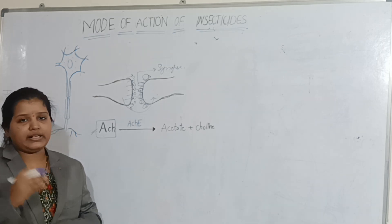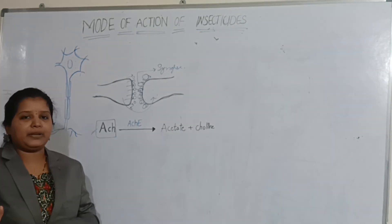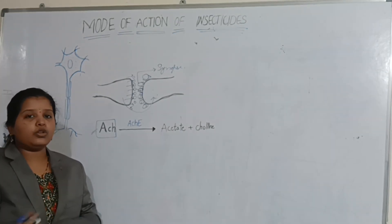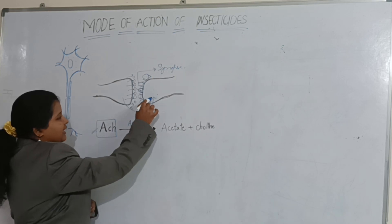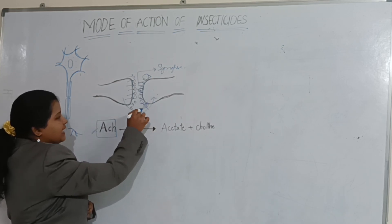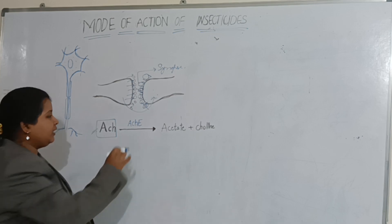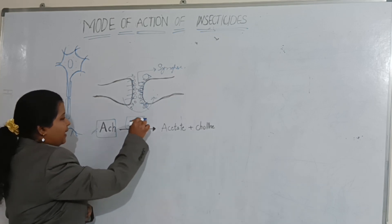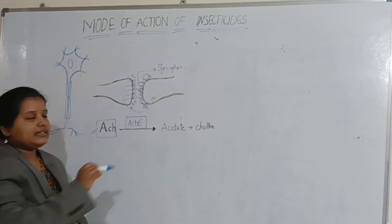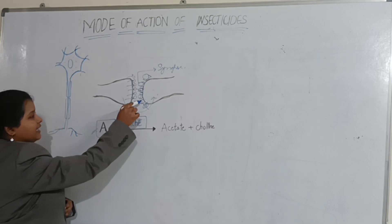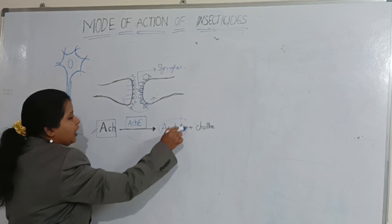After conveying the message, there is no need for the acetylcholine because its function is completed. It has conveyed the message from one neuron to the other neuron and there is no further use for it. Here comes into action the enzyme acetylcholinesterase, which will break this acetylcholine into acetate and choline.